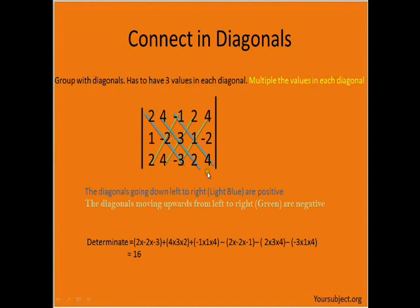This was our original 3 by 5 matrix. Each blue line is one group. The diagonals going down from left to right, which are the light blue ones, are positive, and the diagonals moving upwards from left to right, which are light green, are negative.